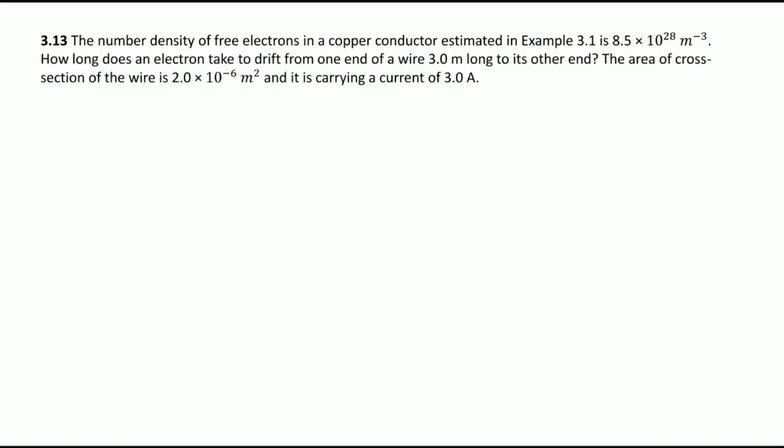Now the last question. Number density of free electrons in copper conductor estimated in Example 3.1 is 8.5×10^28 per meter cube. How long does electron take to drift from one end of wire 3 meter long to other end? Area of cross section is given, current carrying is given. You have to find drift velocity because time is length divided by drift velocity.